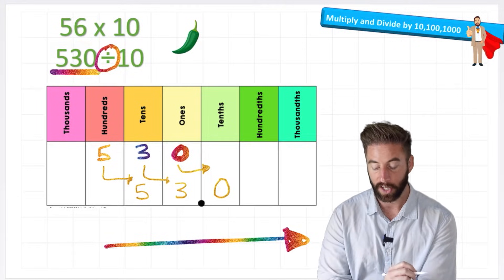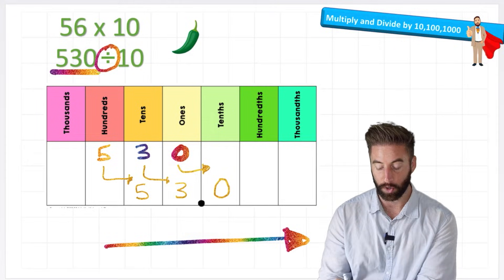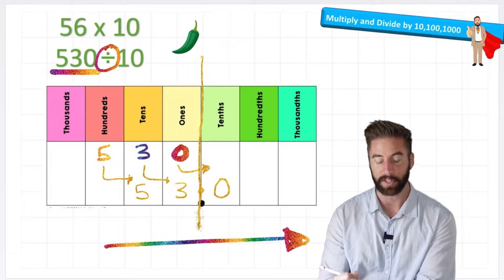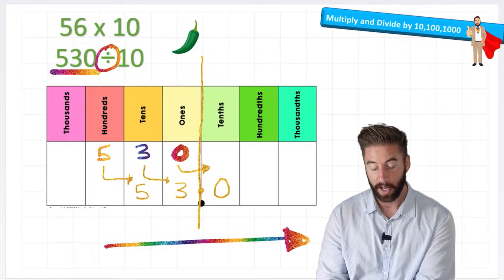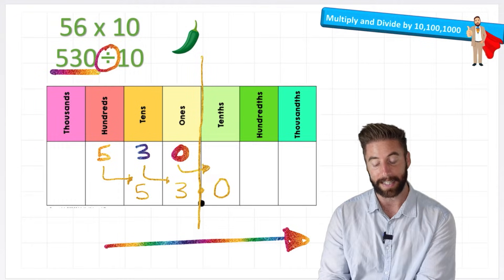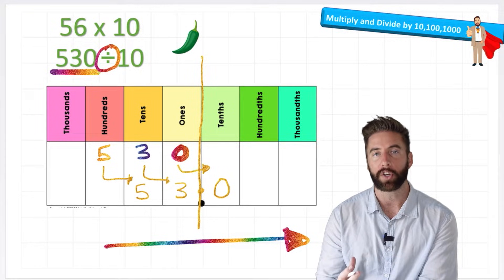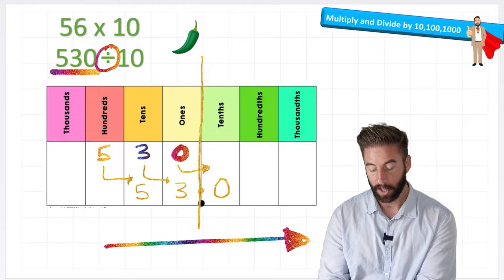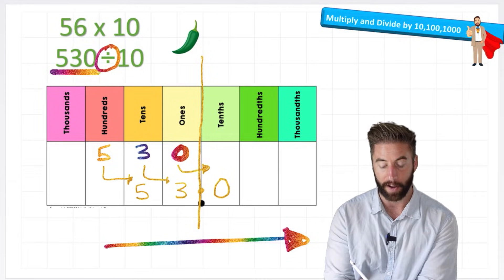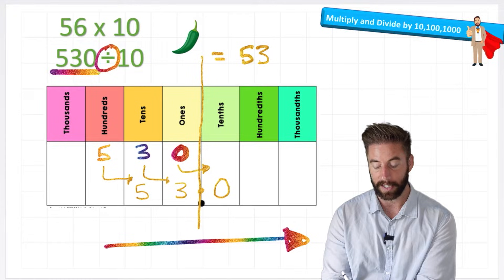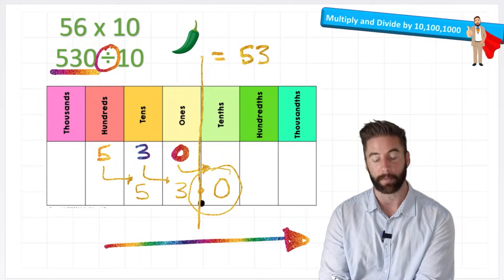I'm nearly finished. The only thing I need to make sure I do is put my decimal in place, because remember this line here represents our decimal place. So my answer is actually now into the decimals, and I've got 53.0. Now, anybody that understands number will understand that we actually don't need to include this .0 in our answer. I can simply write 530 divided by 10 equals 53.